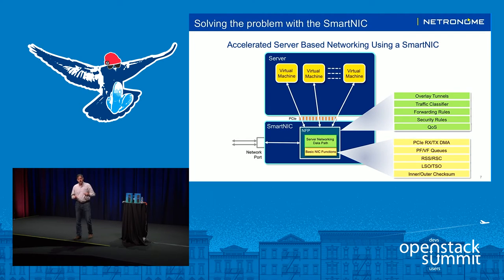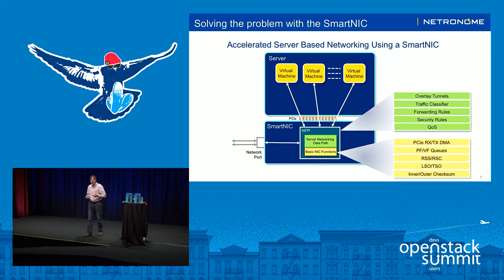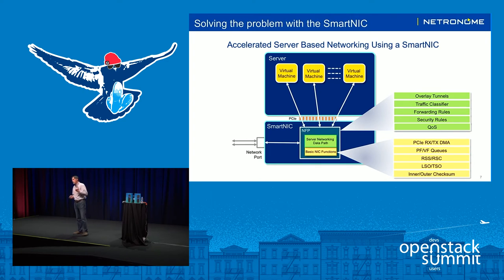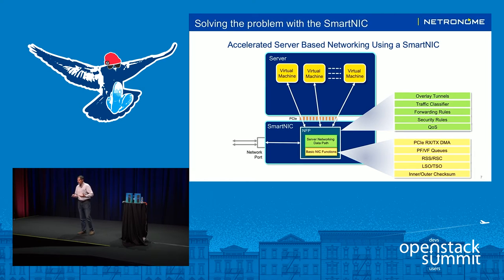This is why we need SmartNICs. There's wide recognition that this is a problem that needs to be solved. The way to solve it is to take the server networking data path and accelerate and offload it down into the SmartNIC — implementing the data path in a processor on the NIC card. All of those functions, the same functionality you had before, can be implemented in the processor on the NIC card. That processor is optimized for server-based networking processing, so it can implement those functions at a much lower cost and power per bit than on the server.